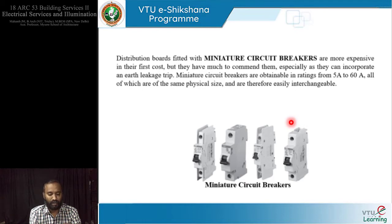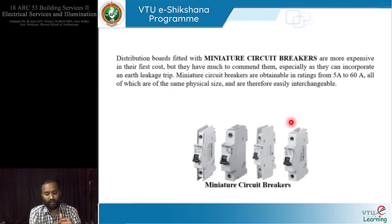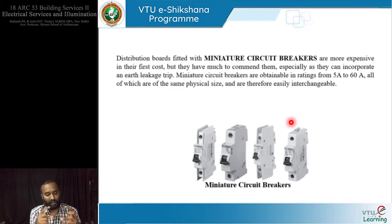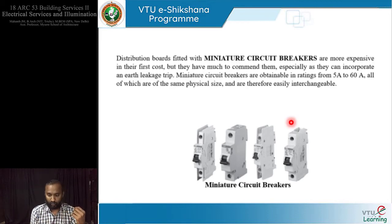Distribution boards fitted with MCBs used to be expensive but are not now. MCBs have much to commend them — they can incorporate an earth strip. There are several types of MCBs, all similar in appearance but distinguishable. They come in various ratings from 5 amps to 16 amps, all of the same physical size and therefore easily interchangeable — it is just a matter of plugging them into the distribution box casing.